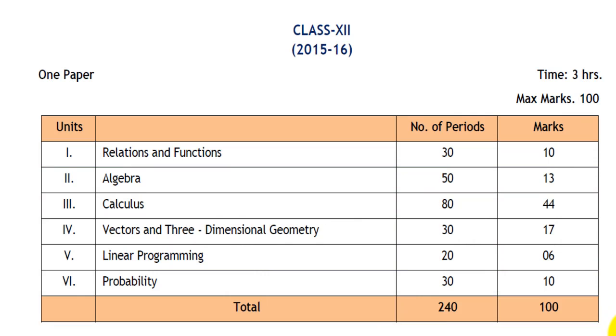This is the unit-wise allocation of marks. Relations and functions carries 10 marks, algebra 13 marks, calculus 44 marks, vectors and 3-dimensional geometry 17 marks, linear programming 6 marks, and probability 10 marks, totaling 100 marks. All this information is available on the official CBSE website.